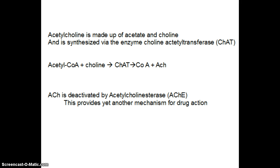Acetylcholine is made up of acetate and choline, and is synthesized via the enzyme choline acetyltransferase, or CHAT for short. Acetyl-CoA and choline come together using choline acetyltransferase to create CoA and ACH. ACH is then deactivated by acetylcholinesterase, which is an enzyme that breaks down ACH into its component parts.